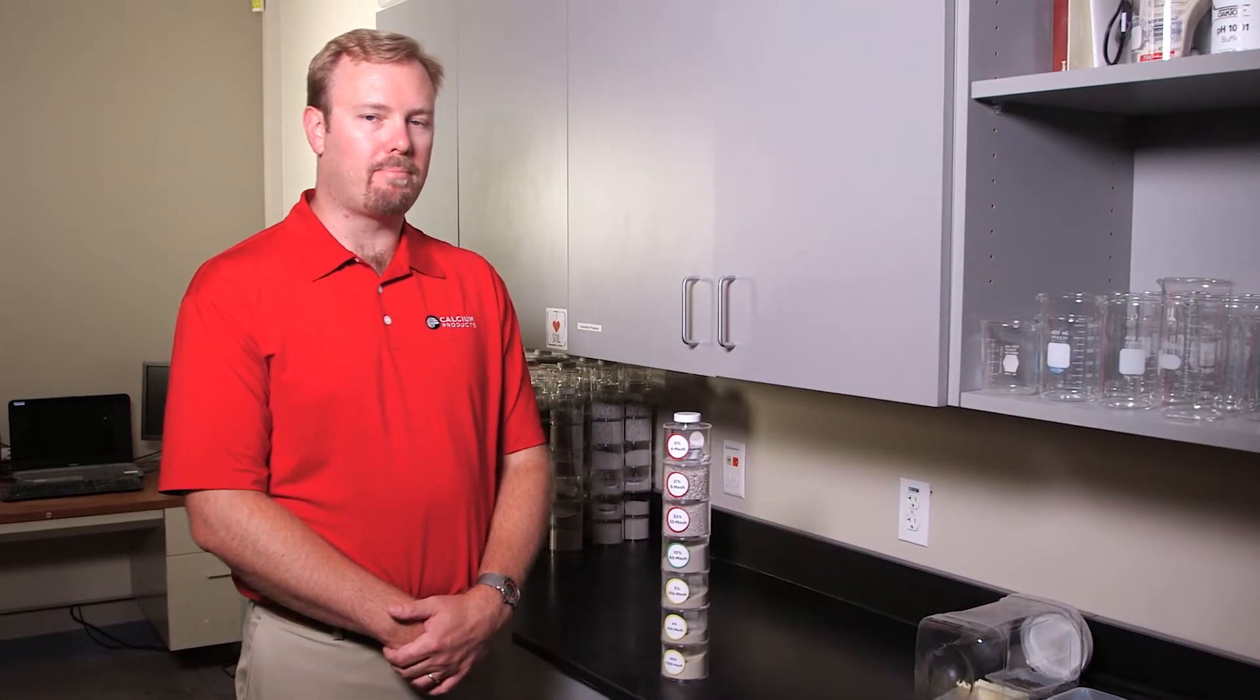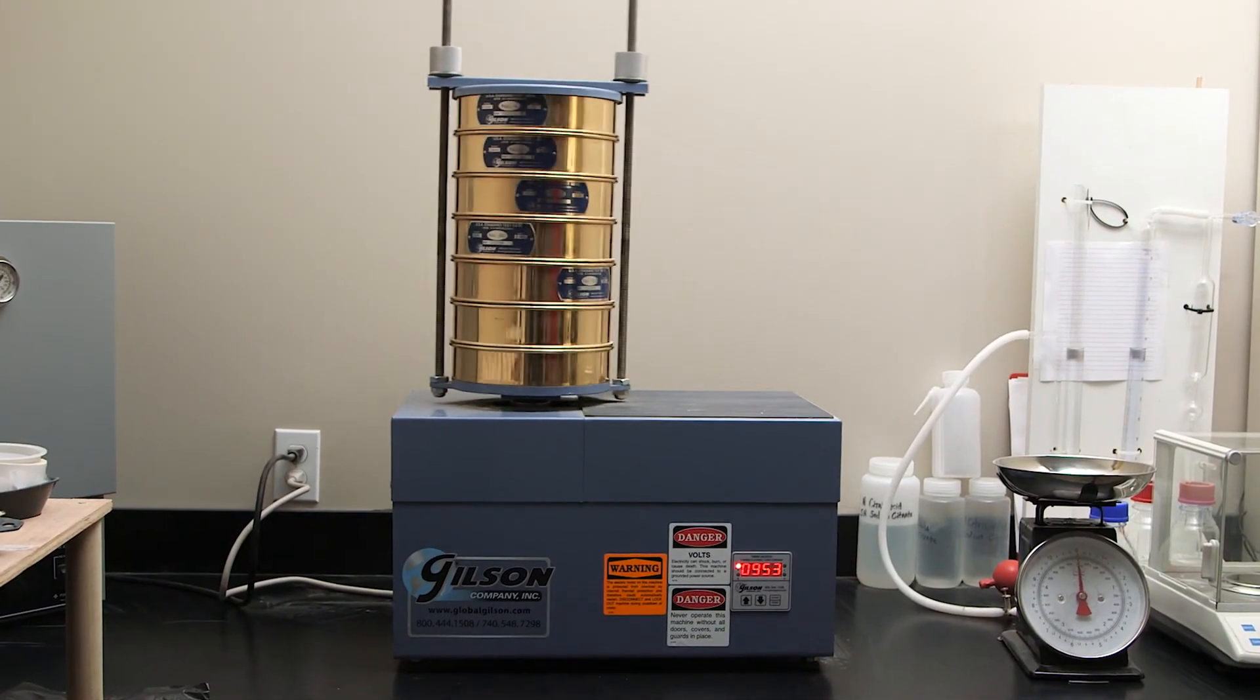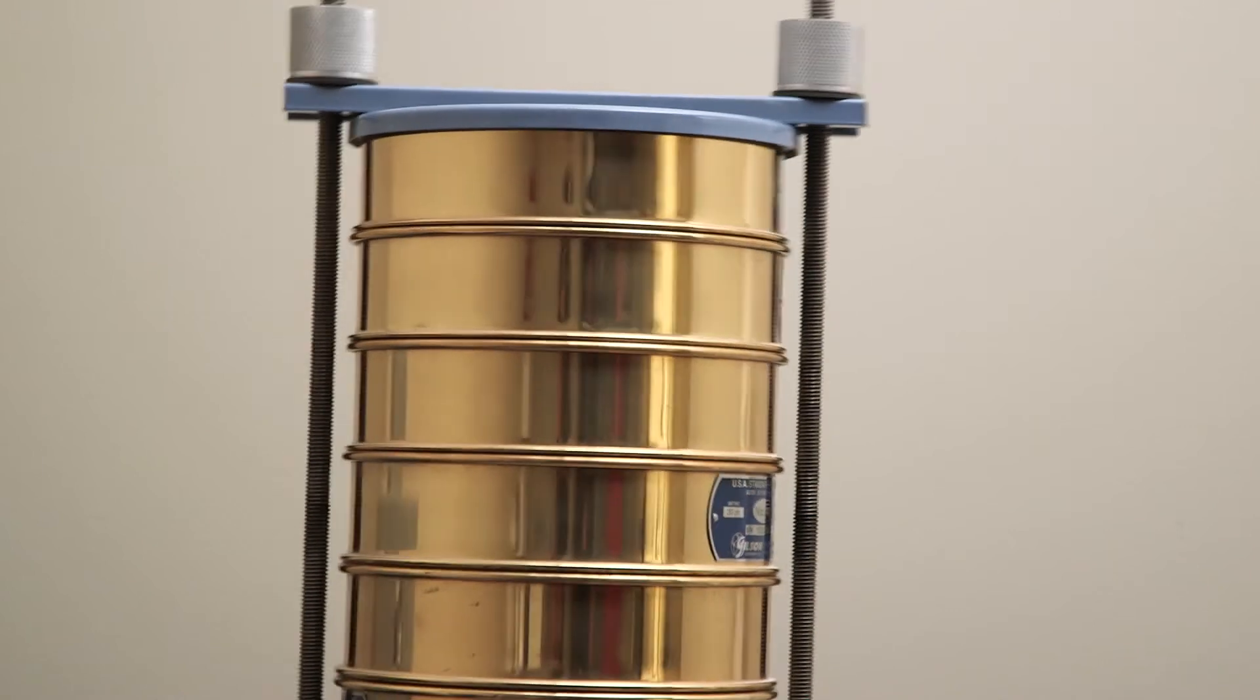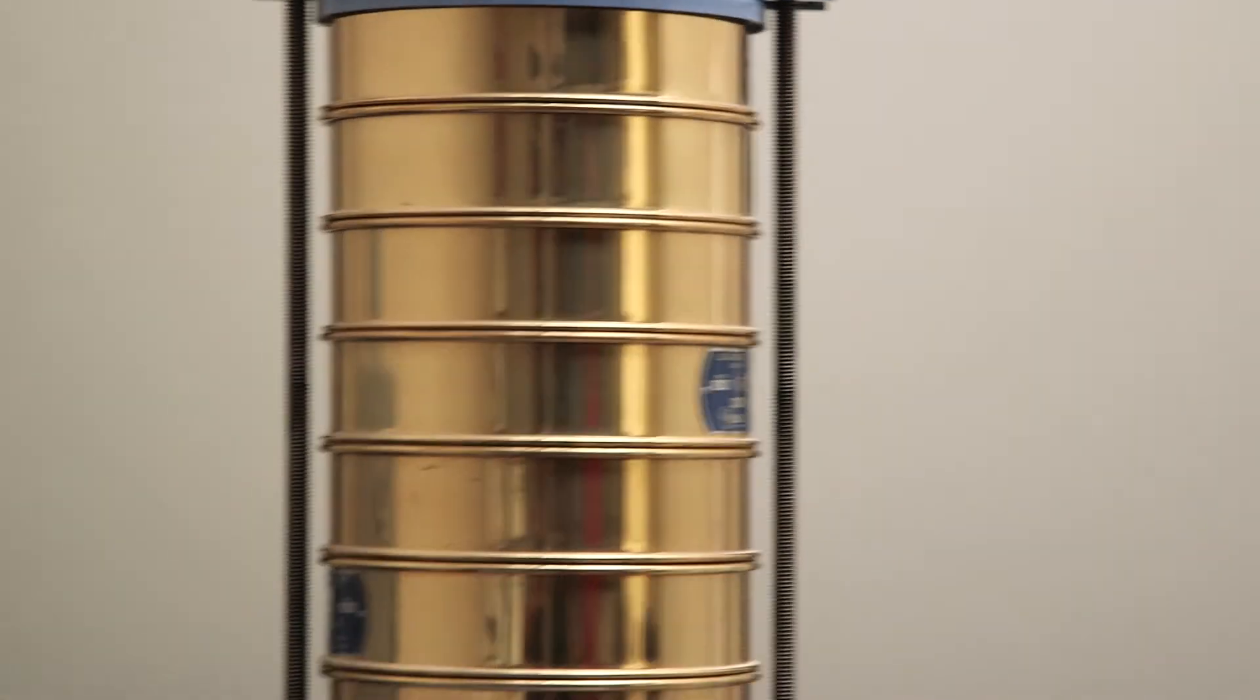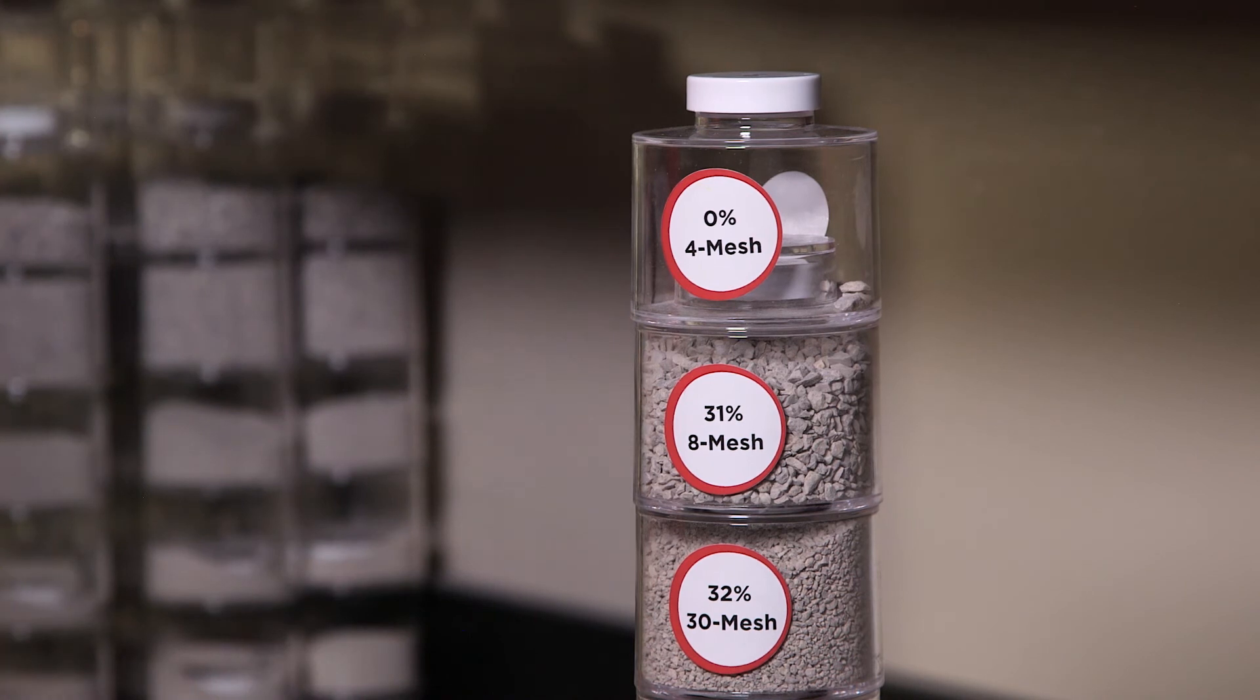Once we receive your ag lime sample at Calcium Products, we put it through our sieve shaker to isolate out the different components and particle sizes of the ag lime. Once we've isolated the different particle sizes from the sieve, we put them in these jars and build the ag lime stack.